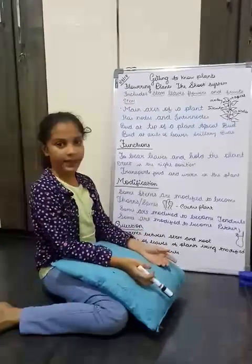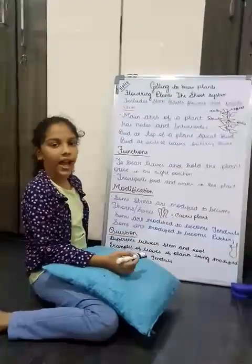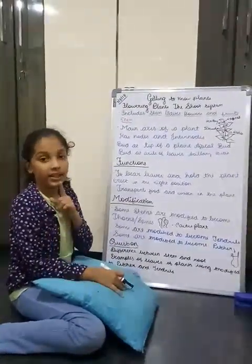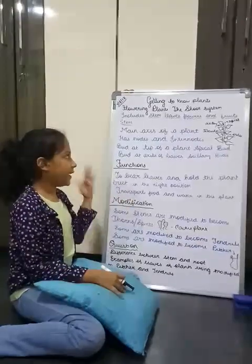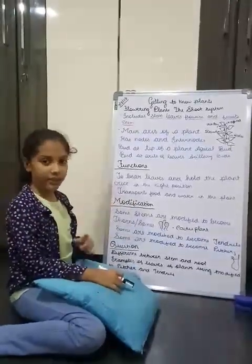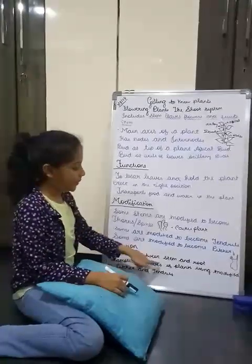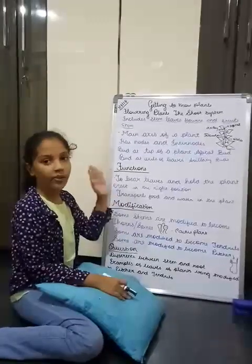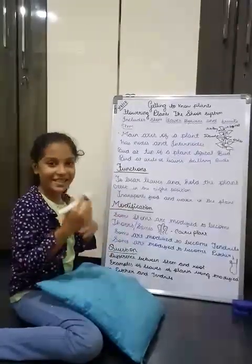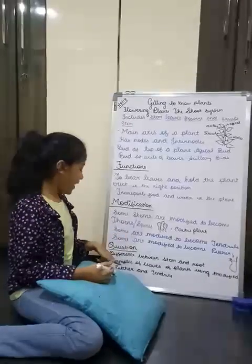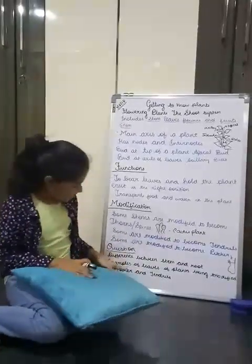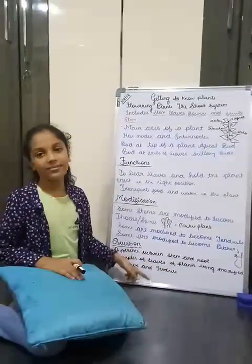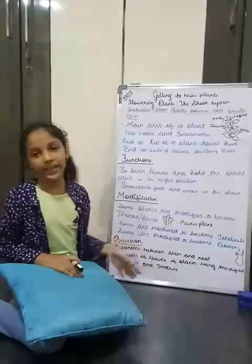That completes the stem part. Comment down below if you have understood this well, and write your answers: first, the difference between stem and root; and second, examples of plants whose leaves are modified into pitchers and tendrils.